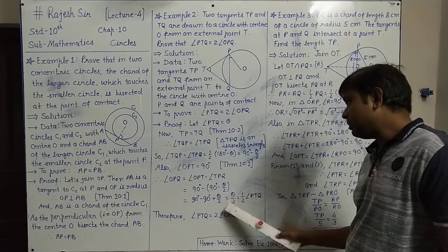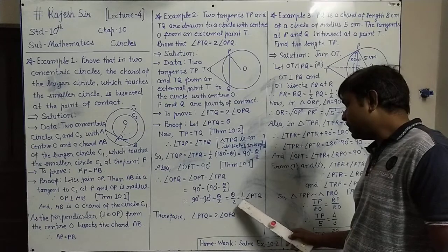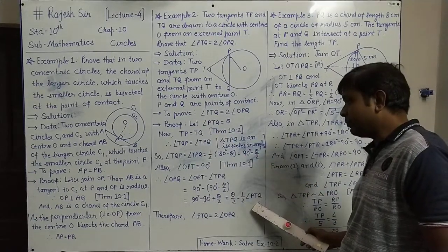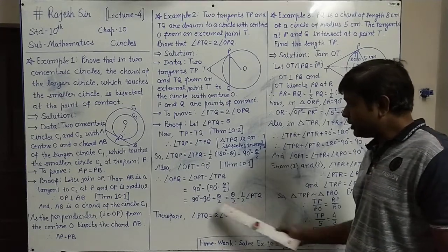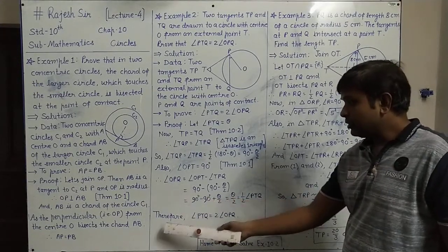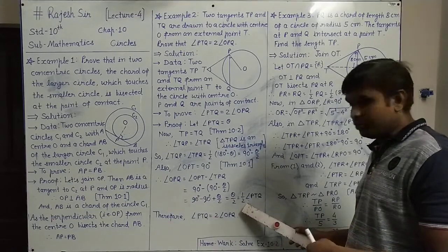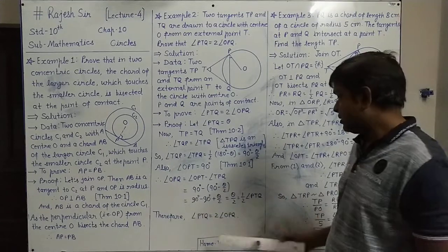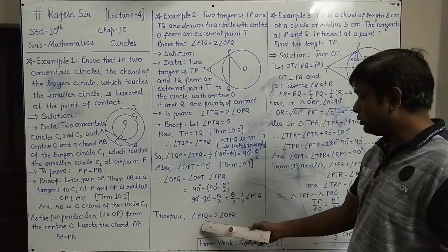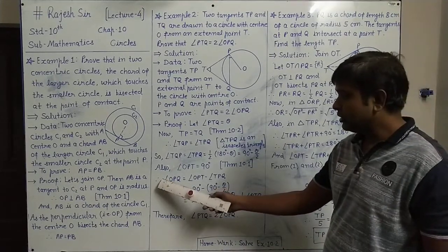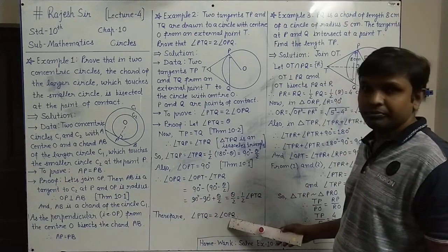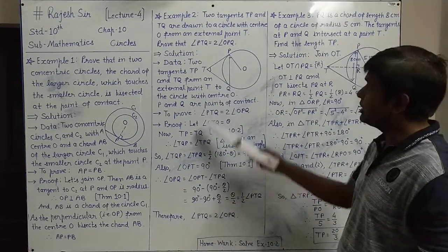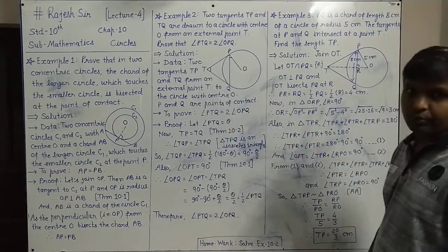So angle OPQ equals theta by 2, which is (1/2) × angle PTQ. Therefore, 2 times angle OPQ equals angle PTQ. Hence proved: angle PTQ equals 2 times angle OPQ.